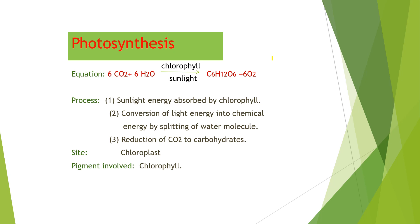Now briefly we can just list the steps of photosynthesis. The first step is that sunlight's energy is absorbed by the chlorophyll molecule. The second step is the conversion of light energy into chemical energy by splitting of the water molecule. And the third step is the reduction of carbon dioxide into carbohydrates.